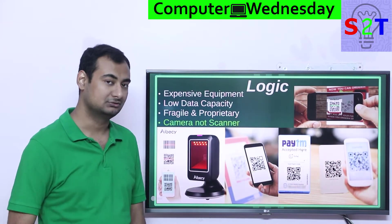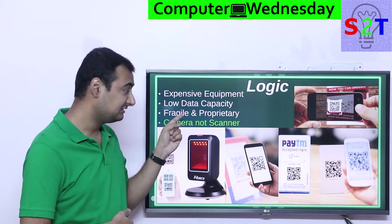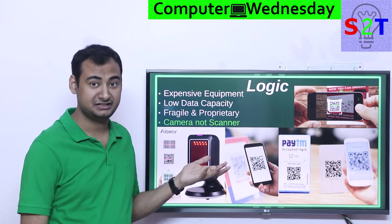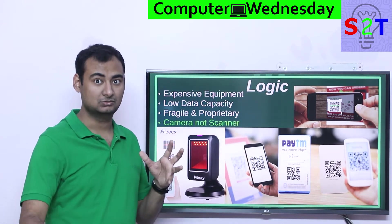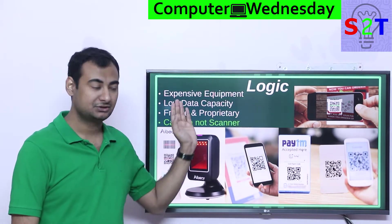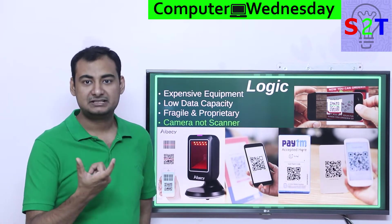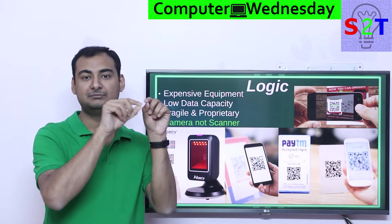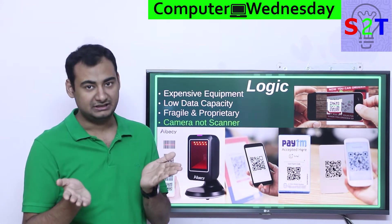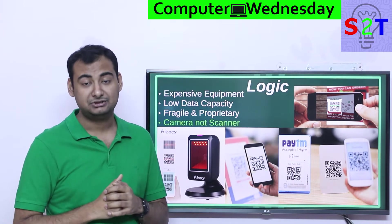Why move past barcodes if it works and is time-tested? Because of the expensive equipment. If you wanted a barcode scanner in the 1990s, that was a serious expense. Another aspect is low data capacity - you can't put too much into it. For example, if you have only 10 slots to store data, that limits how many combinations you can have. With digits 0-9, you get 10 combinations per slot - that's not much.